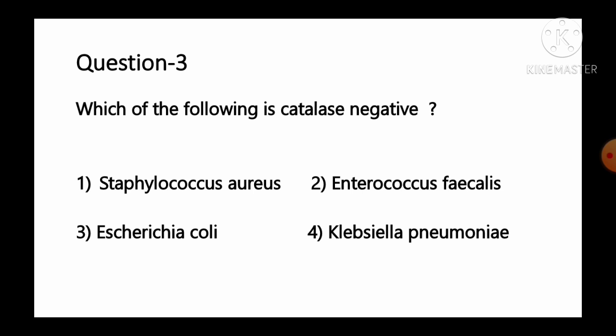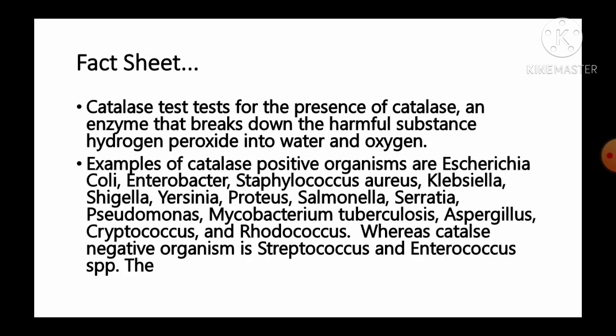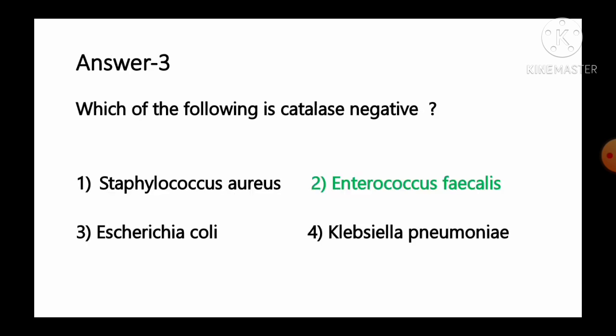Question number 3: Which of the following is catalase negative? Options: 1 Staphylococcus aureus, 2 Enterococcus faecalis, 3 Escherichia coli, 4 Klebsiella pneumoniae. The catalase test tests for the presence of catalase, an enzyme that breaks down hydrogen peroxide into water and oxygen. Catalase-positive organisms include E. coli, Enterobacter, Staphylococcus aureus, Klebsiella, Shigella, Yersinia, Proteus, Salmonella, Serratia, Pseudomonas, Mycobacterium tuberculosis, Aspergillus, Cryptococcus, and Rhodococcus. Whereas catalase-negative organisms are Streptococcus and Enterococcus species. So option number 2, Enterococcus faecalis, is the correct answer.